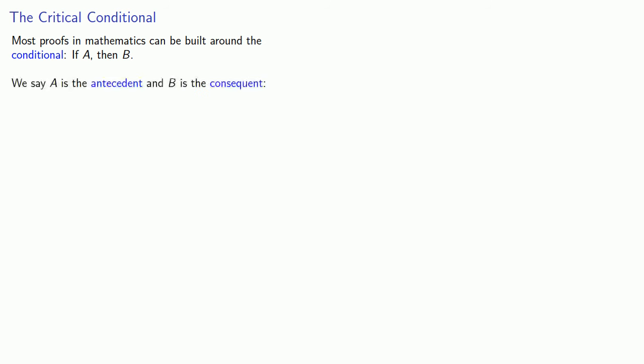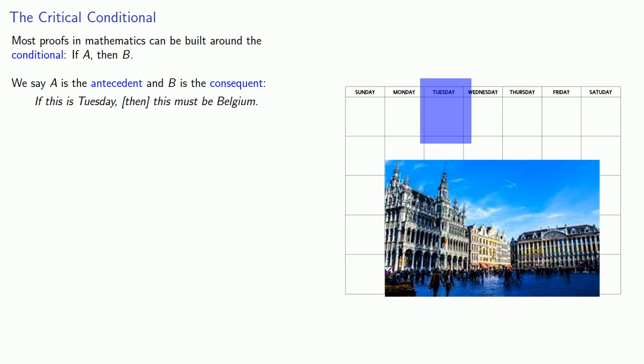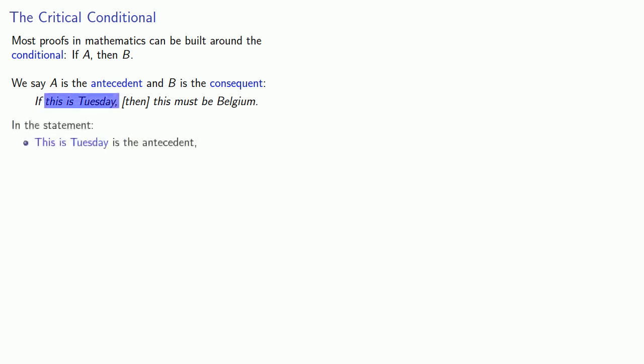Most proofs in mathematics can be built around the conditional: if A, then B. We say that A is the antecedent and B is the consequent. For example, if this is Tuesday, then this must be Belgium. In the statement, 'this is Tuesday' is the antecedent, and 'this must be Belgium' is the consequent.